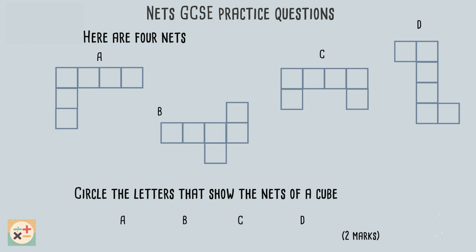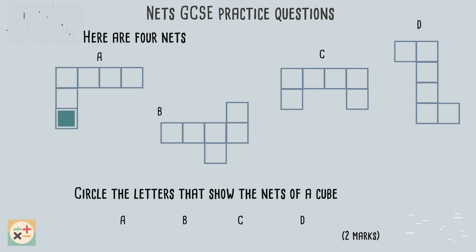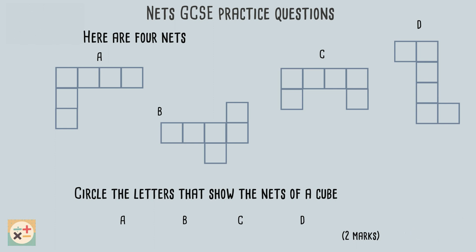Let's start with shape A. Imagine this square was the base of the cube — these two squares could be folded upwards to form two sides of the cube, and this square could be the top. However, this square would overlap the one we already have at the top, and while this square would form a side, we would be missing the other side.